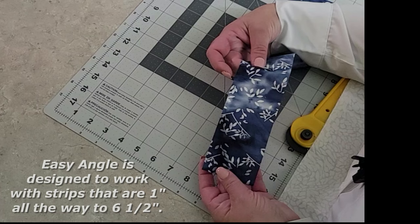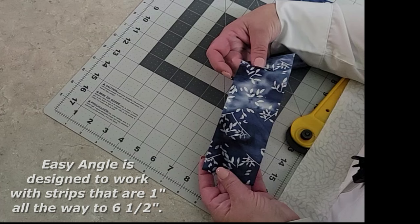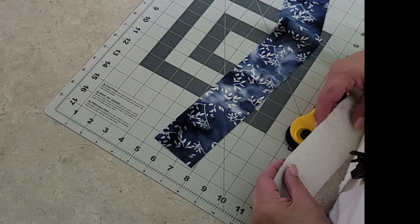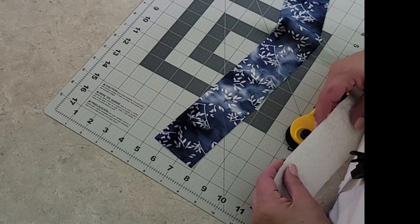Today for our demonstration, we're going to use two and a half inch strips. As I chose my strips, I like to remember that half square triangles are always going to show up better if you have a really nice contrast. So we're going to use my two favorite colors: navy blue and white.